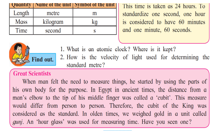Therefore the cubit of the king was considered as the standard. Since it differed from person to person, they used the king's length from the elbow to the tip of the middle finger. In olden days, gold was weighed in a unit called the gunj, and an hourglass was used for measuring time. You must have seen pictures or videos of the hourglass — sand placed in it slips from the top to the bottom part in one hour.